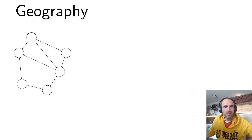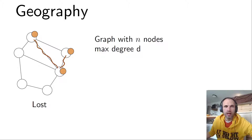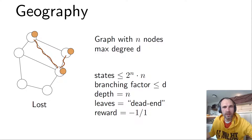There's a game called Geography. There's a starting node and players alternatingly go to a next node from the previous node in some graph, and those nodes are eaten up. At some point you cannot make a move and then you've lost the game, because the current node doesn't have an adjacent node which is not eaten up yet. If the graph has n nodes and maximum degree d, we can determine basic features: the number of states is at most two to the n times n — two to the n because every node can be taken or not taken, and times n because you have to remember which is the last node you've been in.